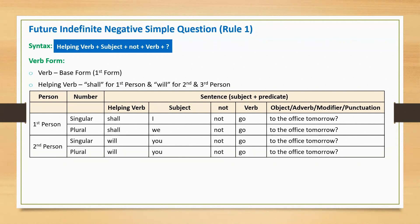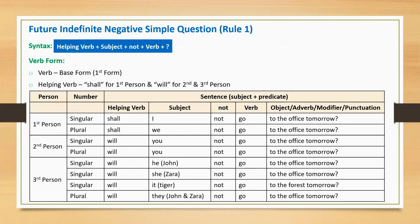Second person singular: 'Will you not go to the office tomorrow?' Second person plural: 'Will you not go to the office tomorrow?' Third person singular: 'Will he not go to the office tomorrow?' We can also use a name instead of the pronoun: 'Will John not go to the office tomorrow?'